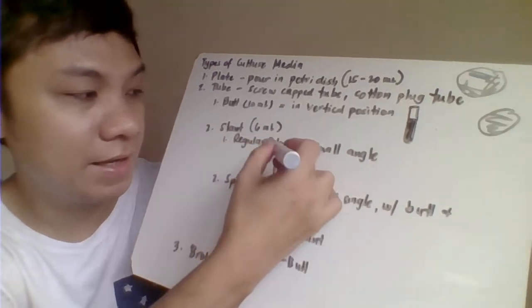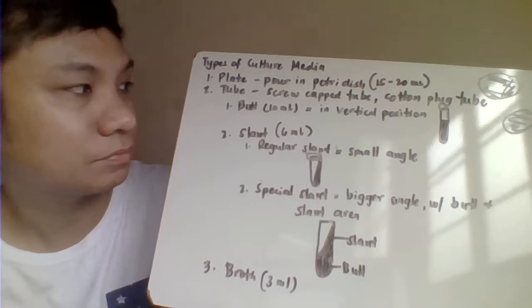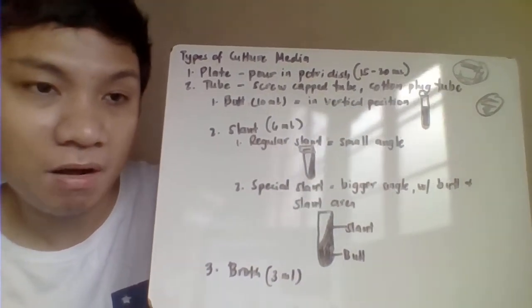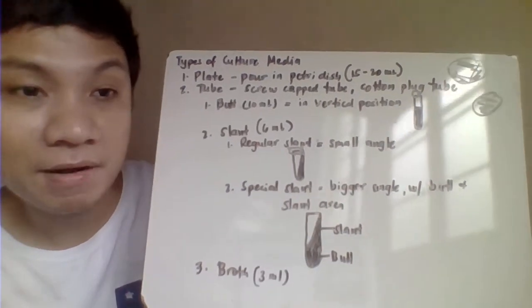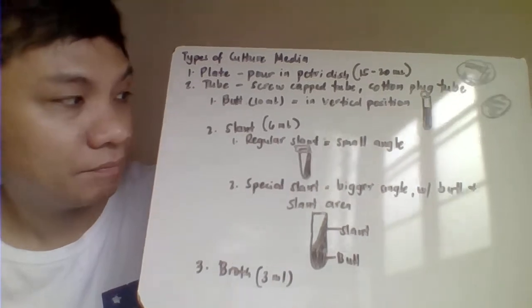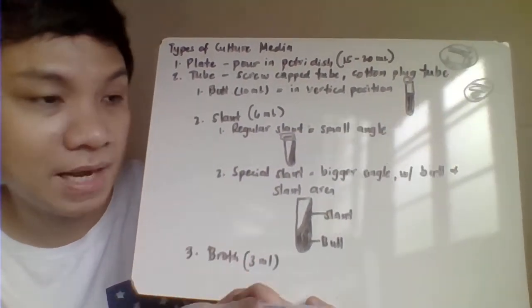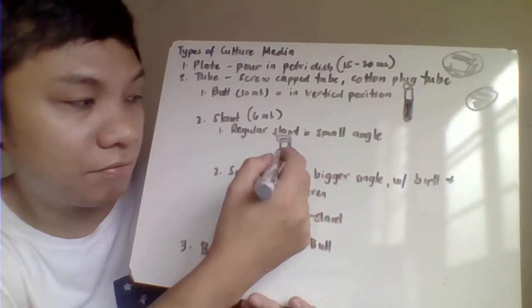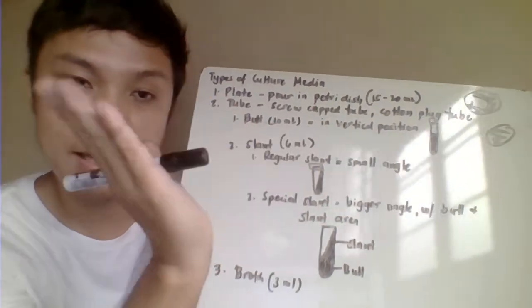The screw-cap tube may have a cover or a cotton plug. One preparation in tube form is the butt, prepared by pouring sterilized culture media in a vertical upright position, approximately 10 ml. Another type is the slant — the regular slant is only a slanted surface, prepared by positioning the tube at a smaller angle while solidifying.